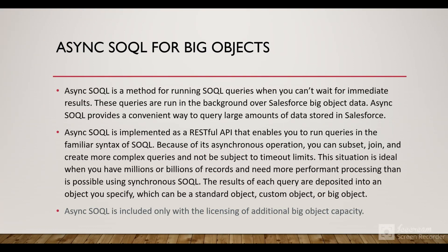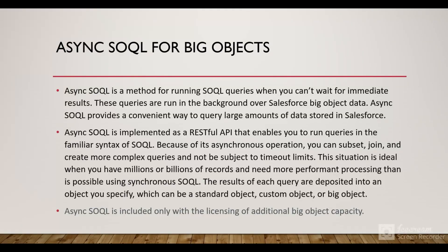Async SOQL is implemented as a RESTful API that enables us to run queries using familiar SOQL syntax. Because of its asynchronous operation, we can use subsets, joins, and create more complex queries not subject to timeout limits — ideal when you have millions or billions of records. Results are deposited into a target object, which can be a standard, custom, or big object. Note that Async SOQL is only included with the additional big object license.